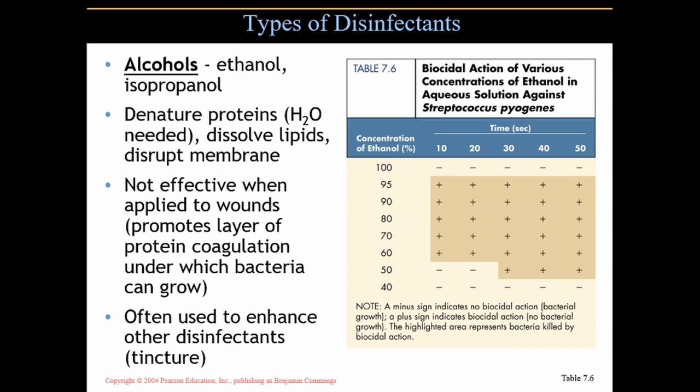Alcohols are often used to enhance other disinfectants — we call that a tincture. Looking at this table showing ethanol concentration at different percentages: at 100% there's no effectiveness because there has to be water. At 95% ethanol, 5% water, you get effectiveness across the board from 10 seconds to 50 seconds. This is tested against Streptococcus pyogenes, which causes strep throat, a gram-positive bacterium.